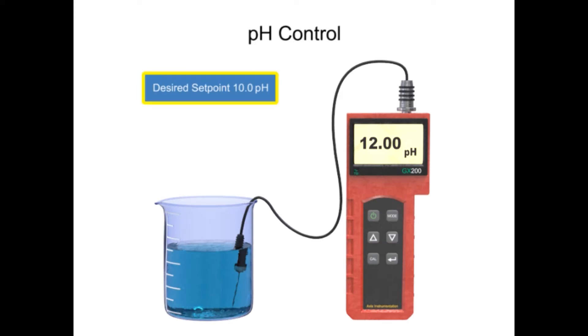To maintain the desired pH level in a solution, a sensor is used to measure the pH value. If the pH is not at the desired setpoint, a reagent is applied to the solution.